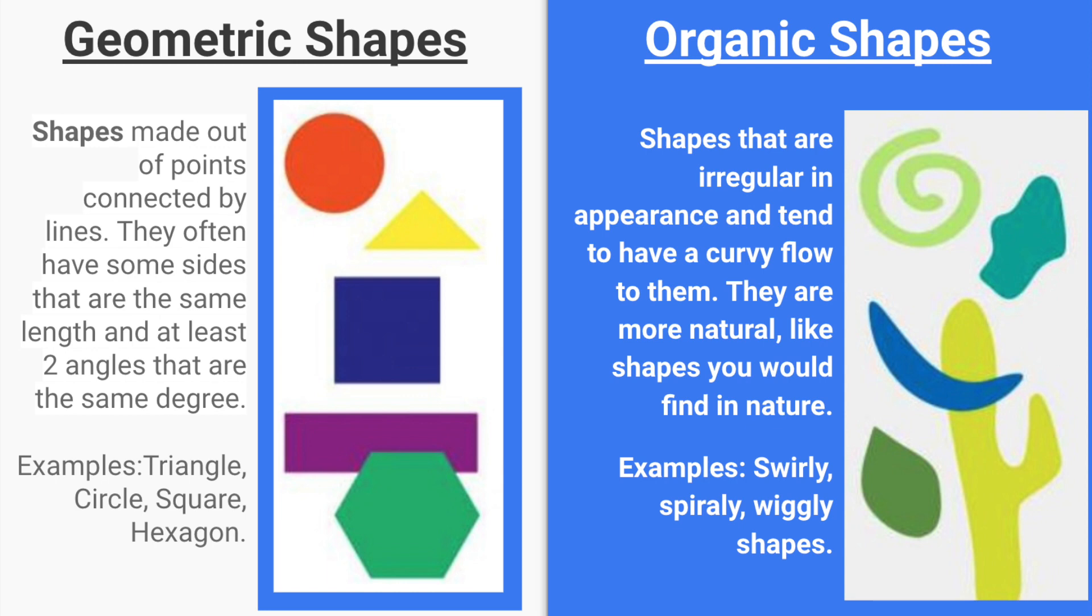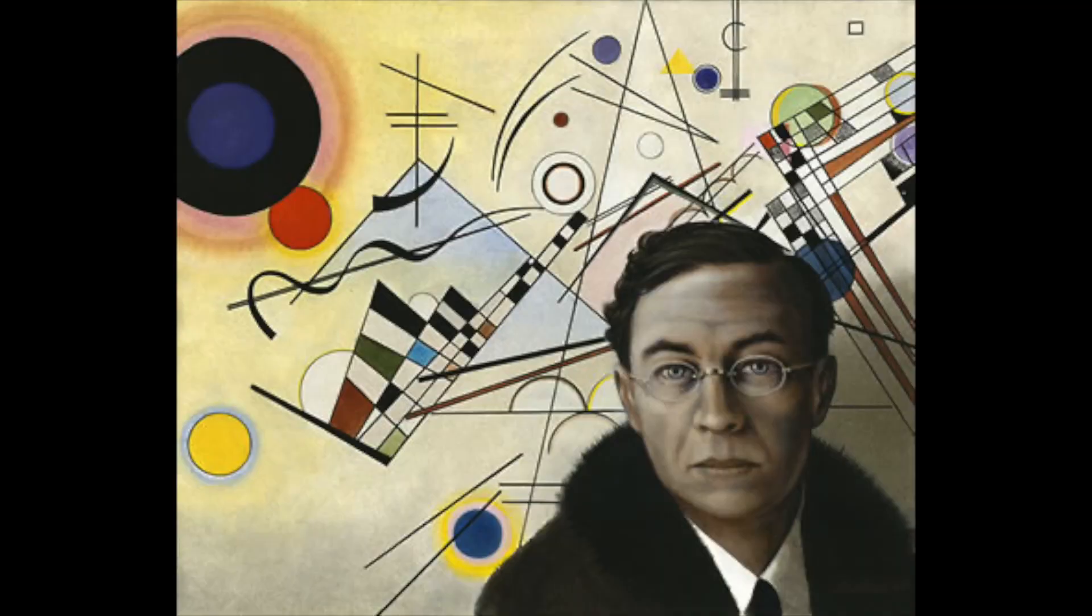Organic shapes are shapes that you make up or they're found in nature. They're more irregular in appearance and they're not symmetrical. So shapes like leaves or cacti are examples of organic shapes. They're swirly, they're wavy, they have curves to them. So we're going to be making up organic shapes and drawing geometric shapes in our drawings.